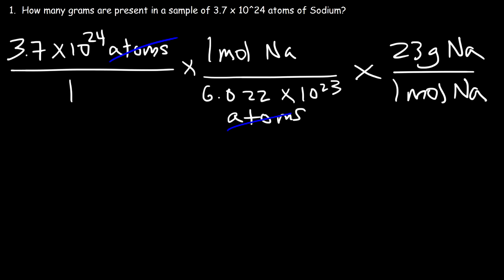Now all we need to do is cancel moles of Na and calculate the answer. So it's 3.7 times 10 to the 24 divided by 6.022 times 10 to the 23, and then multiplied by 23. The answer is 141.3 grams of sodium.